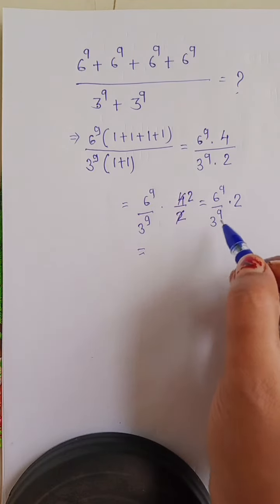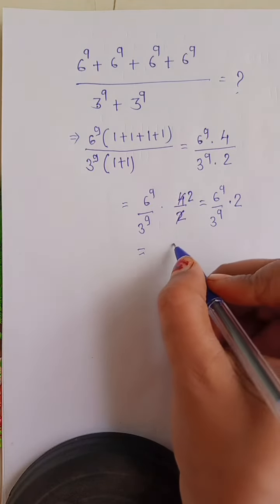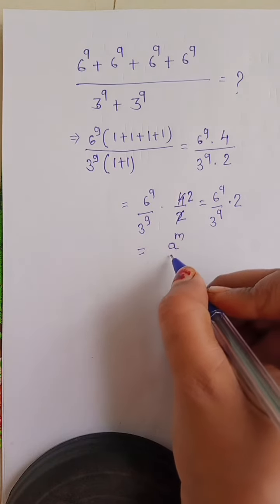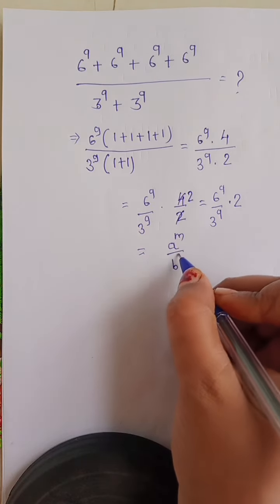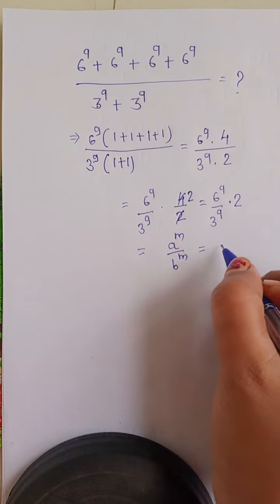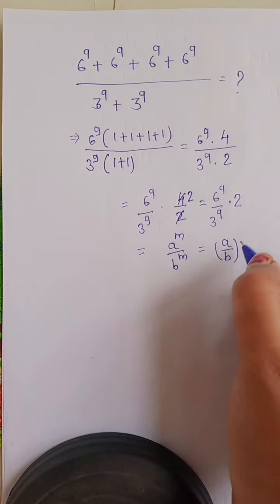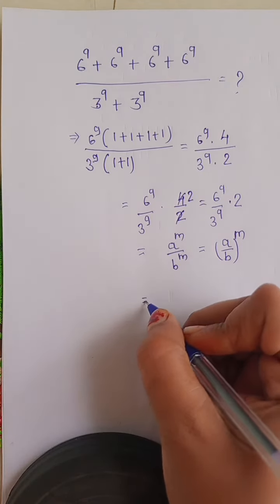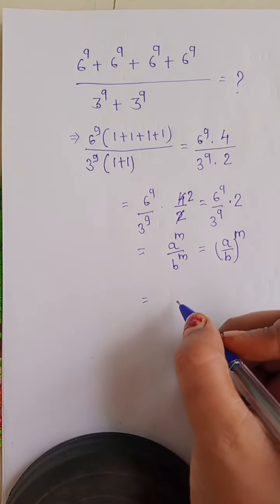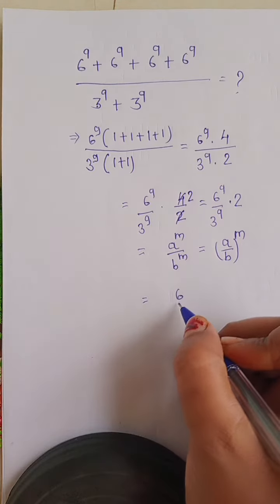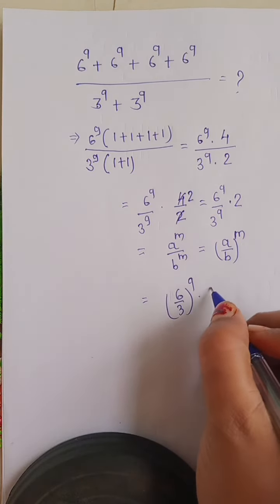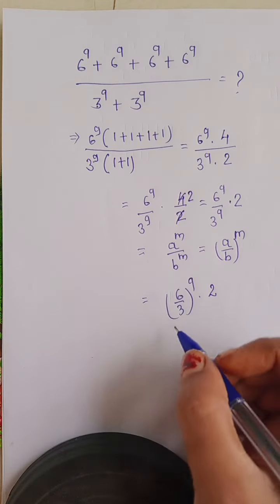We know the formula: a power m upon b power m is equal to (a upon b) power m. Okay, so here we can apply this formula, and we will get (6 upon 3) power 9, into 2. That gives us 2 power 9, into 2. Clear.